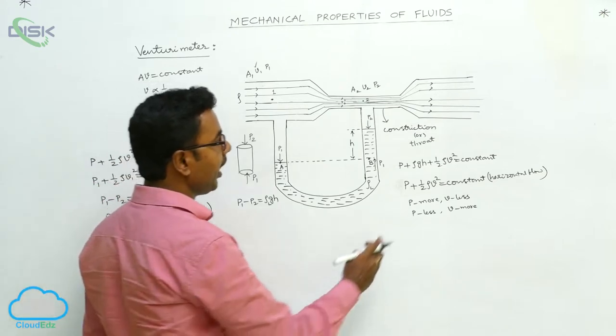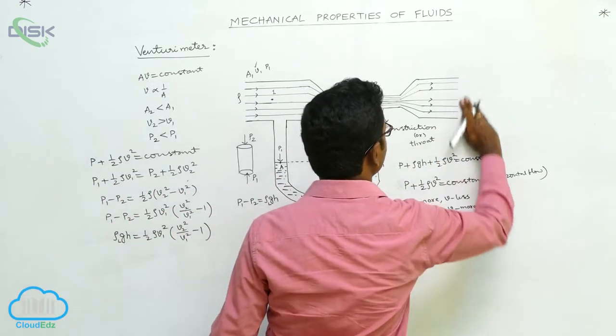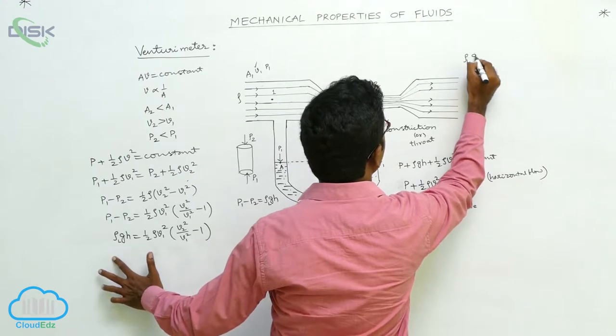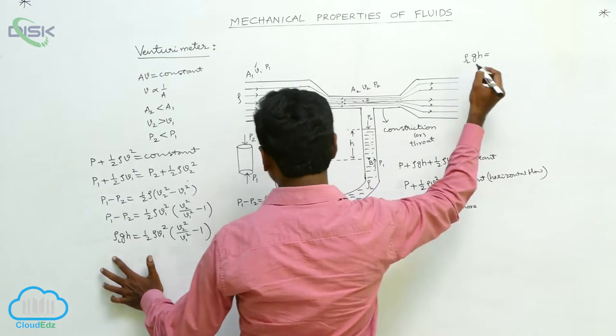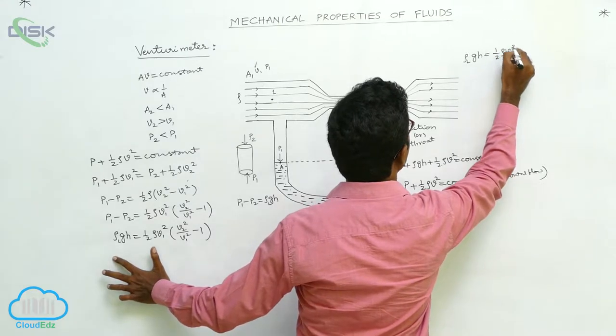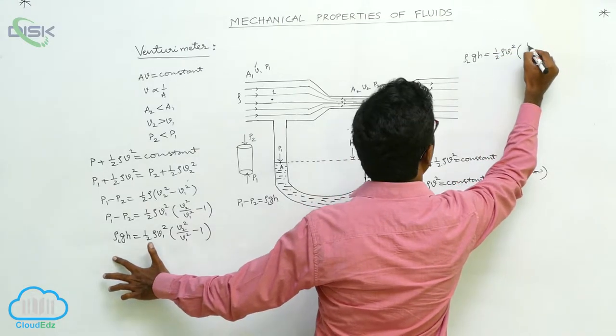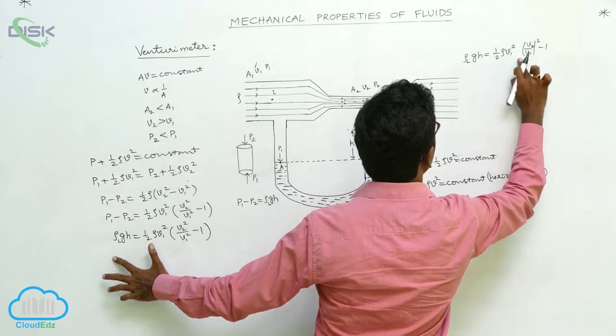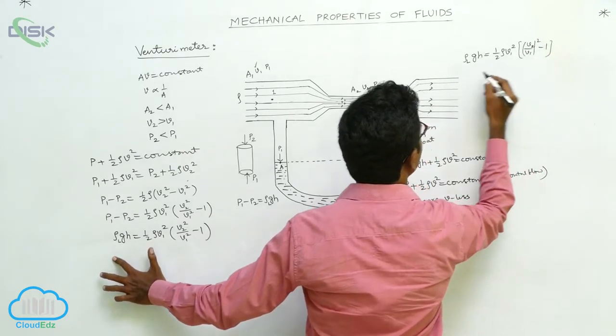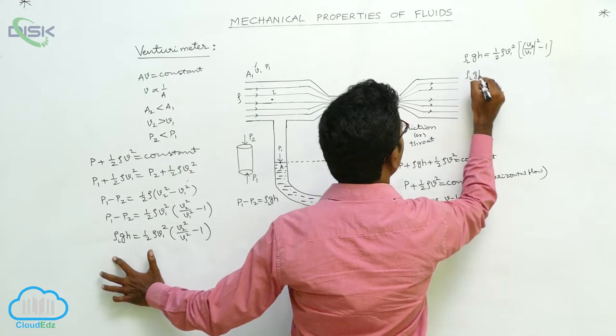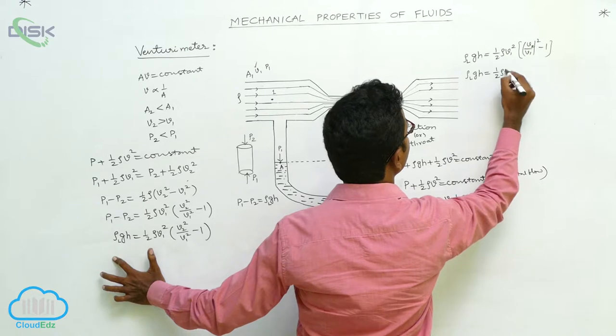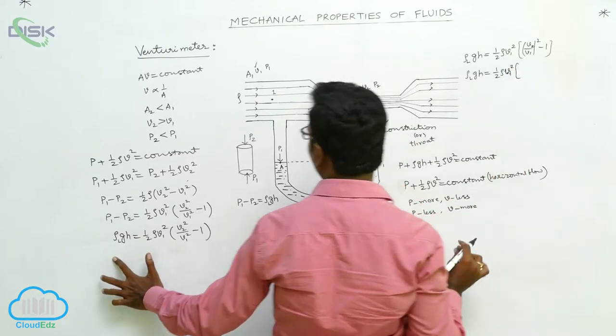This equation can also be written as rho LGH is equals to half rho V1 square into V2 by V1 whole square minus 1. Now rho LGH is equal to half rho V1 square V2 by V1.